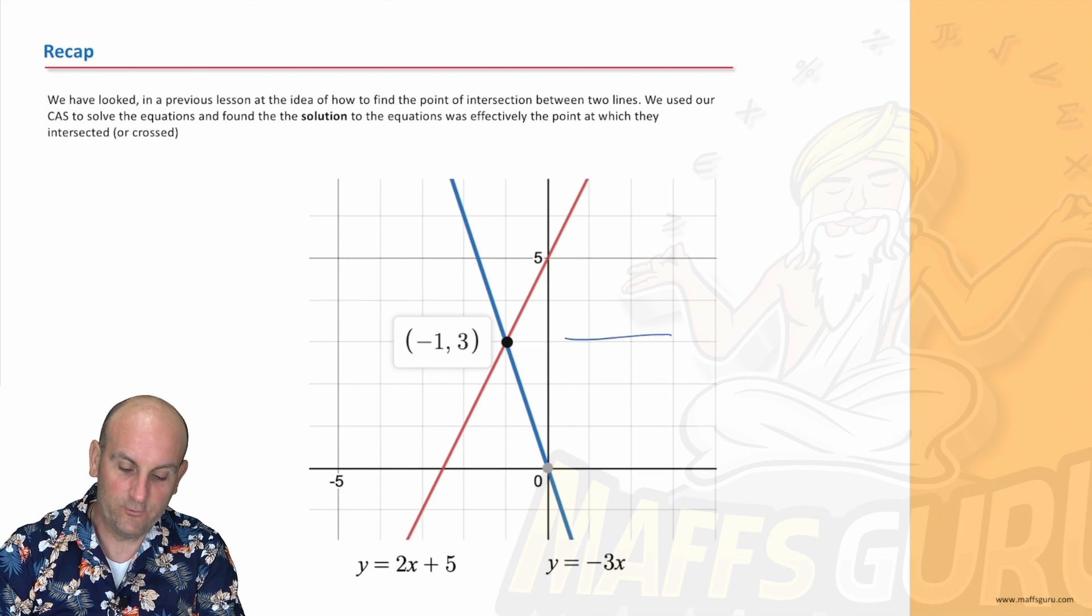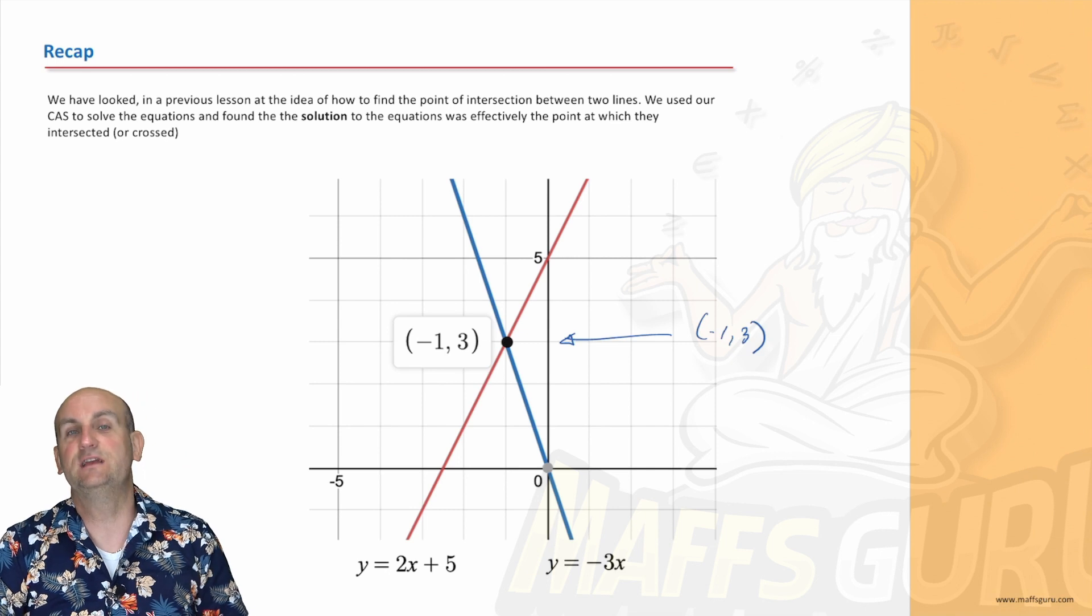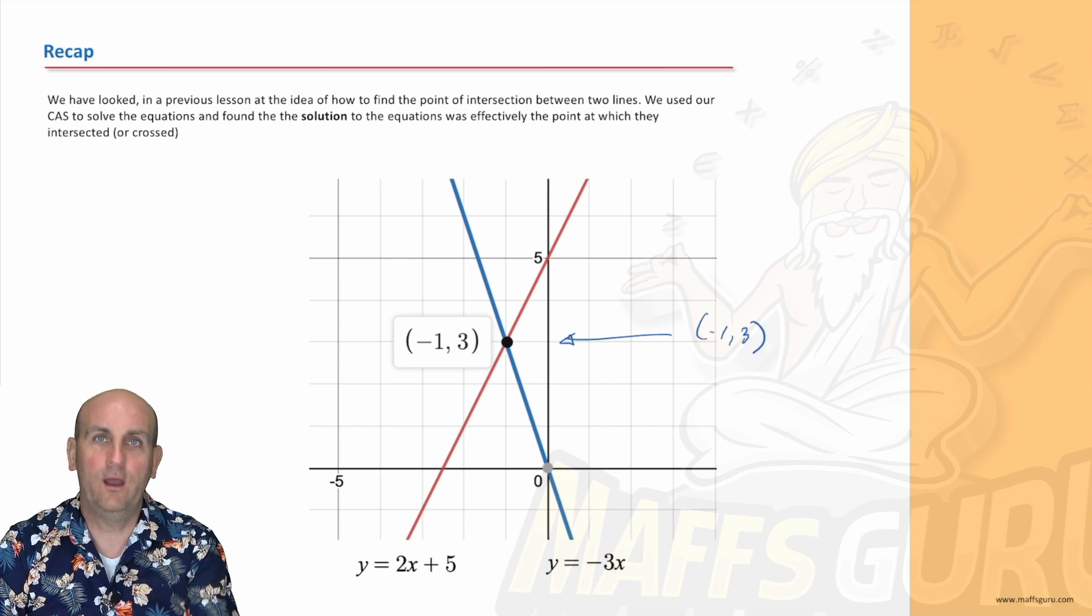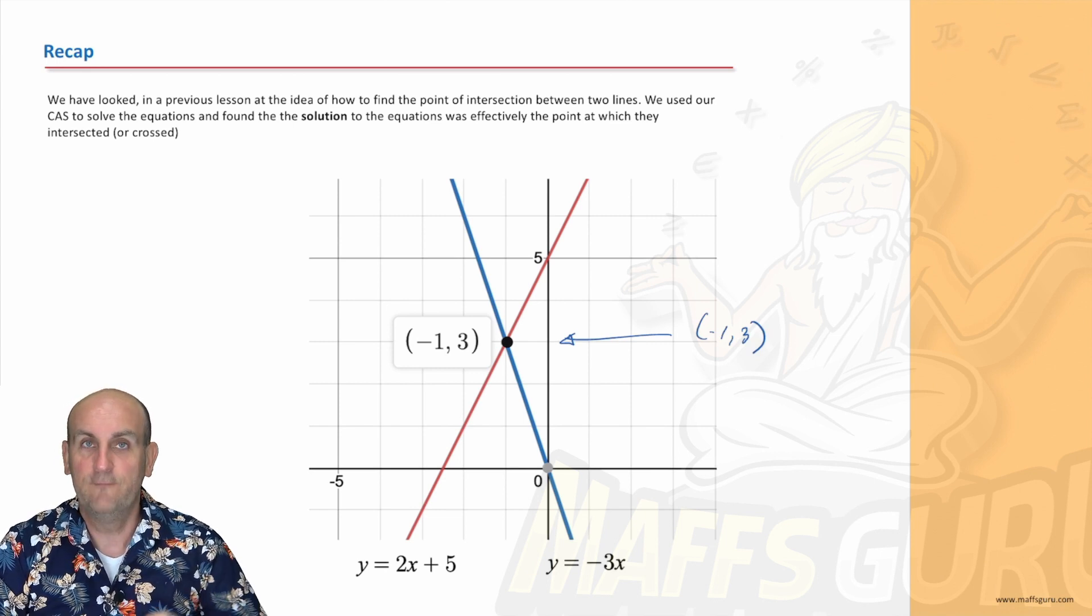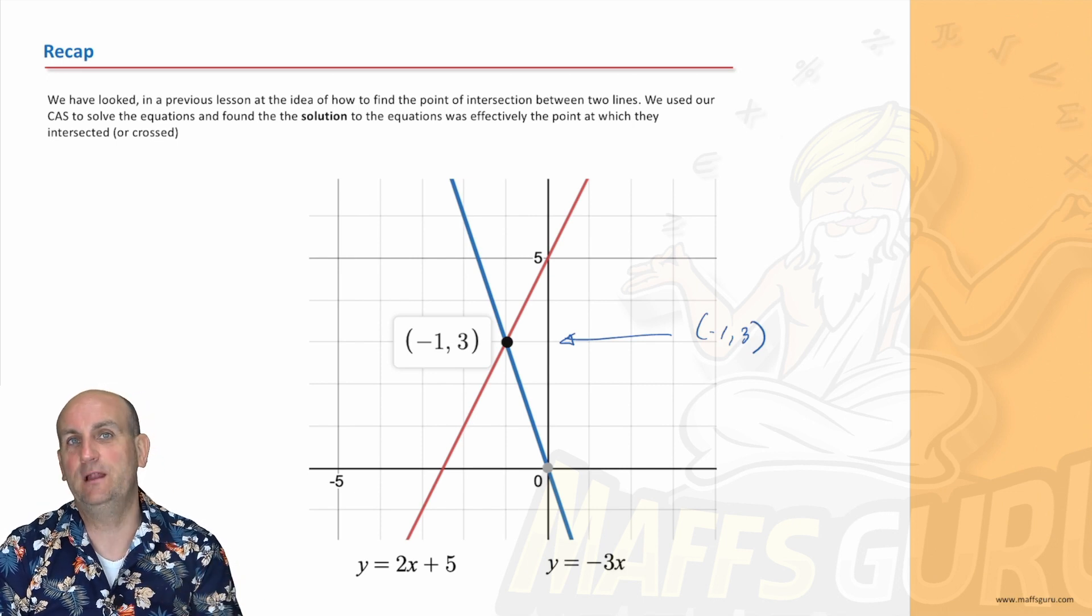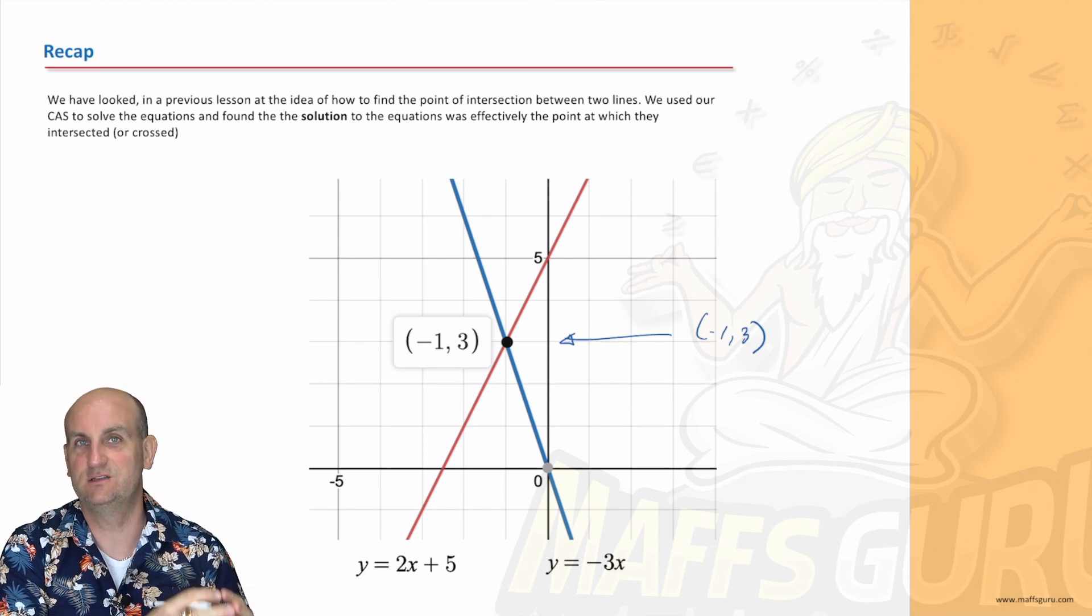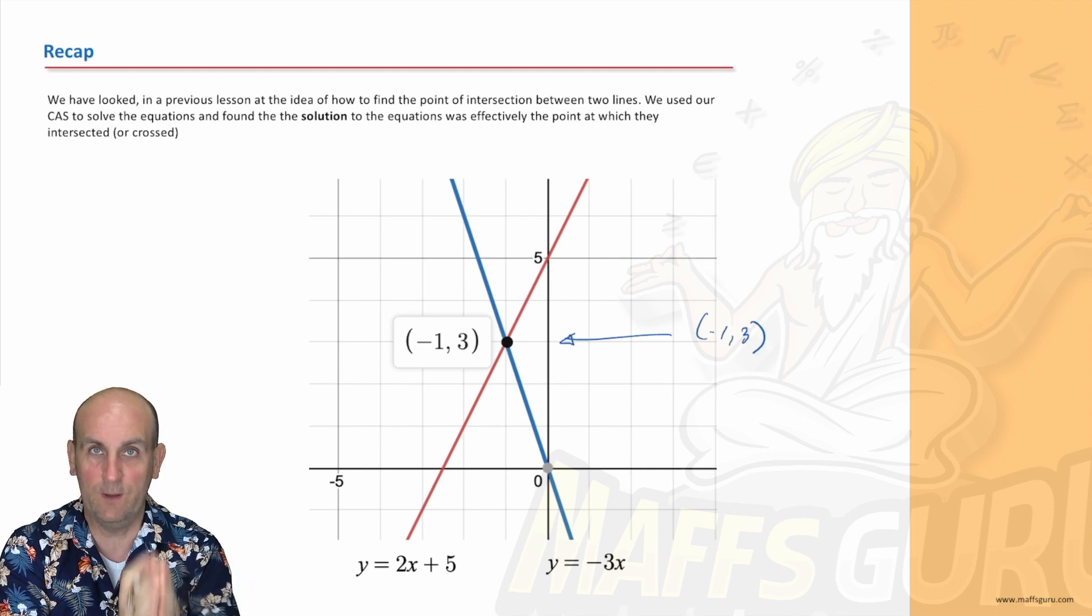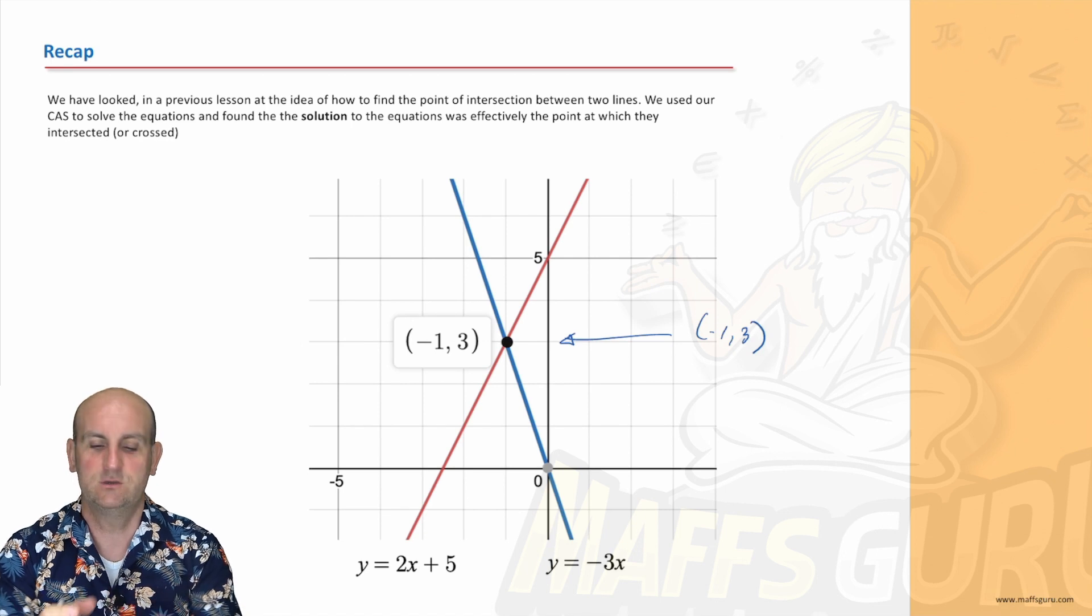And yes, as I've said before, that line there or that little dot there, that minus one comma three is the point of intersection. What is that? It is the point on both lines that are exactly the same. That's really important. For both of those lines, at that one point, the x values and the y values are exactly the same, which is why we can use simultaneous equations or the things we did in our previous video to help us.